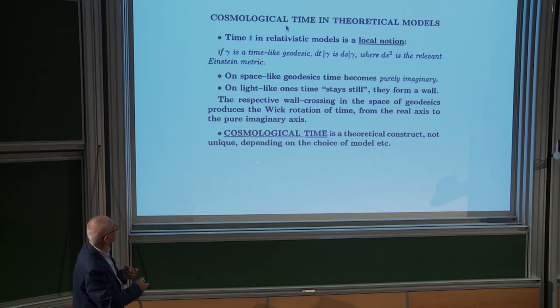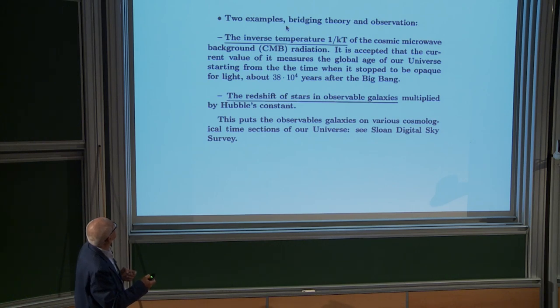Cosmological time is a theoretical construct, not anything like these local times. It's not unique and depends on the choice of model, of the way physicists match observations with their mathematical model. Here are two important examples that bridge theory and observations. One example is the inverse temperature of the cosmic microwave background radiation, 1/(kT). It is accepted that the current value of this background radiation measures the global age of our universe, starting from the time when we start seeing light, approximately that many years after the Big Bang. Before that, it was opaque. This is one way to define cosmic time.